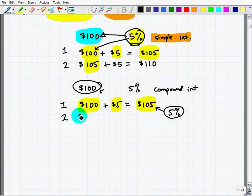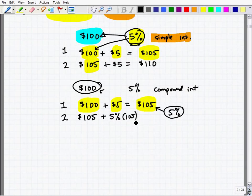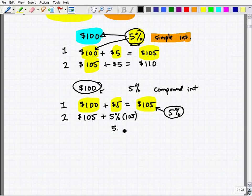So now, year two, you have $105 already going into year two, plus you're going to earn 5% on $105. So let's see what that is, 5% of $105. You want to go 0.05 times $105 is $5.25.